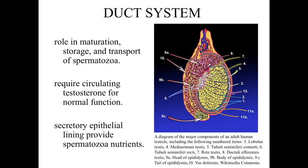The seminiferous tubules are shown on the diagram to the right — you can see them as yellowish structures. Everything else within this diagram represents the duct systems we'll be discussing. Everything within the male reproductive system, from the seminiferous tubules to the duct systems to the accessory glands, requires circulating testosterone for normal function. We talked about the Leydig cells in the previous lecture — those interstitial cells which, under stimulation of luteinizing hormone, secrete testosterone. We need to maintain adequate levels of testosterone to have a functioning male reproductive system.